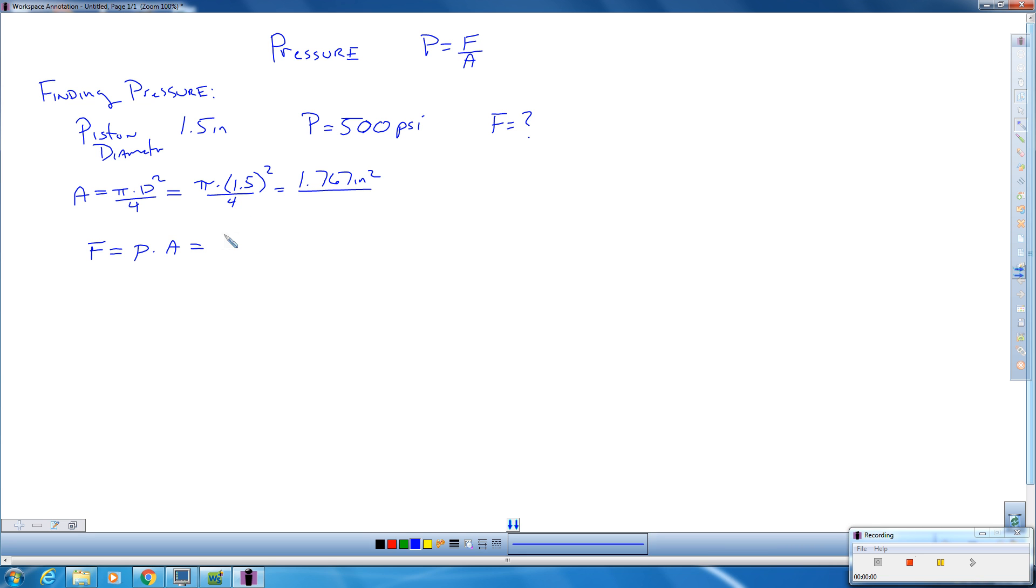All right, so our pressure is 500 pounds per square inch times 1.767 inches squared. So that gives us, this is inches squared here. So that gives us 884 pounds. Inches squared cancels with inches squared. So our force always has to be in pounds.